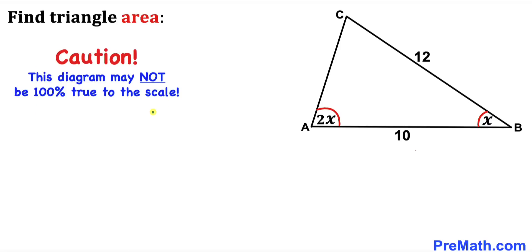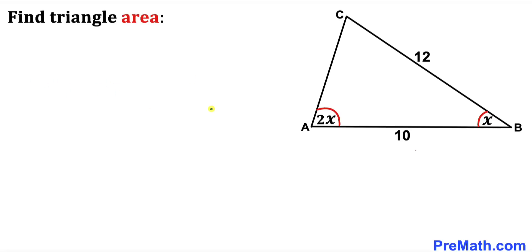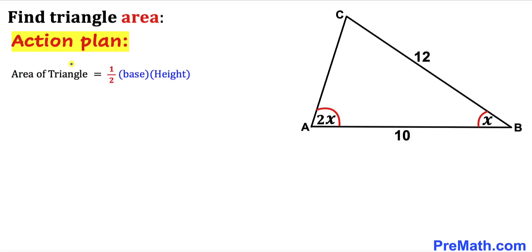Please keep in mind that this figure may not be 100% true to scale. Let's get started. Here's our action plan: since we are interested in calculating the area of this given triangle, let's recall the area formula — area equals half times base times height. In our case the base is 10 and the height is unknown.